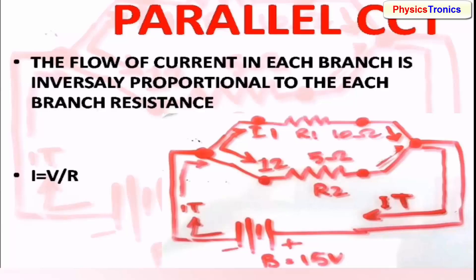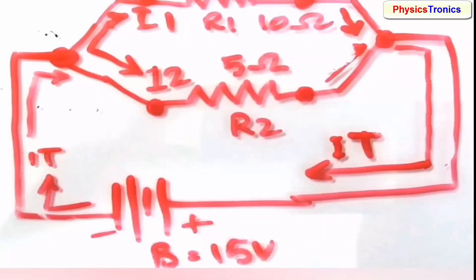If the resistance is high, the current will be low. If the resistance is low, more current will flow within the branch. Now we will see the circuit.